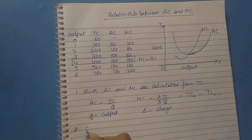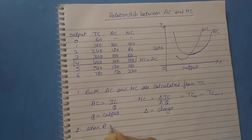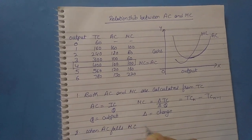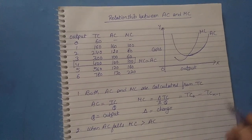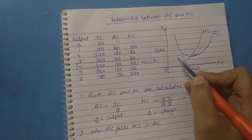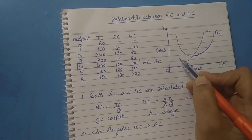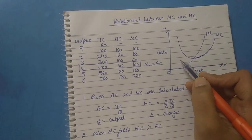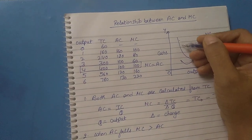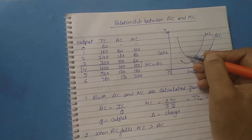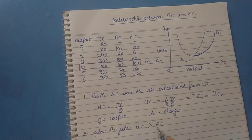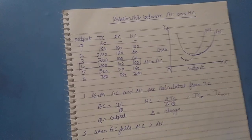The second point is: when AC falls, MC is less than AC. As you can see, when AC falls, MC is below AC. That's why when AC is falling, you can see the AC is falling and MC is below the AC.